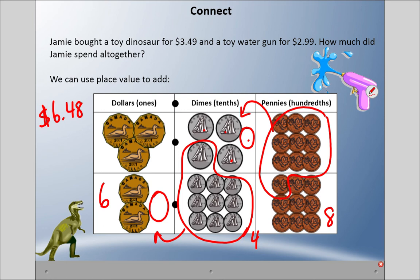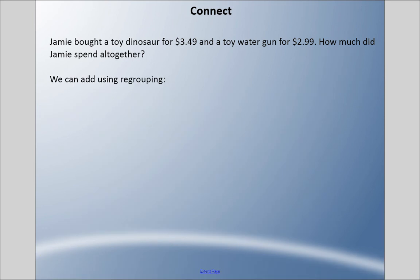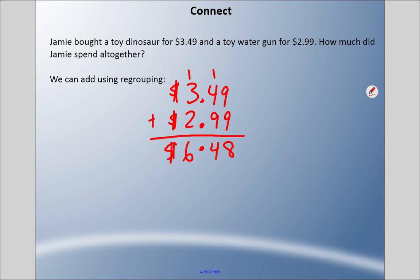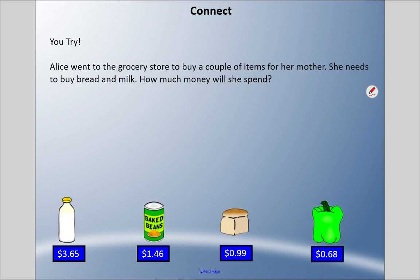Of course, we can do the regrouping method. Three dollars and 49 cents plus two dollars and 99 cents. Put our units in, and right away I'm going to remember to put my decimal place in—that's important. My hundredths line up, my tenths line up, my whole numbers line up. Nine plus nine is 18. Carry the one. One plus four is five, plus nine is 14. Carry the one. One plus three plus two is six. So six dollars and 48 cents.